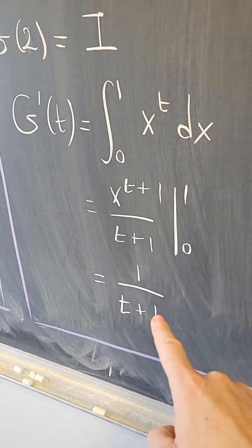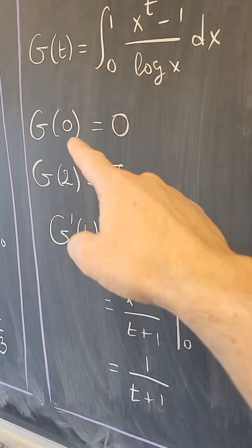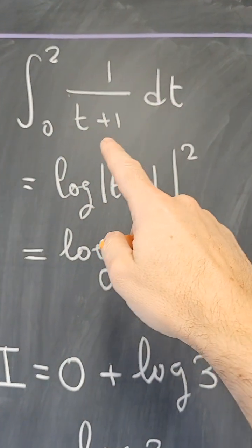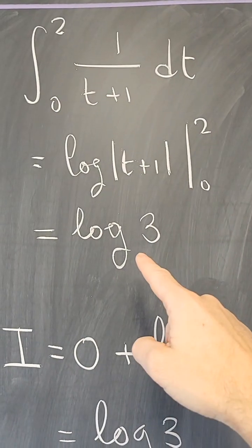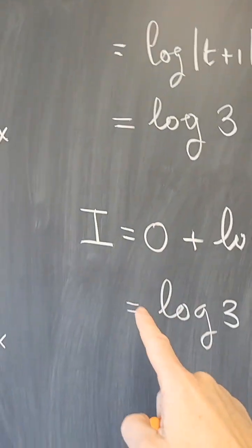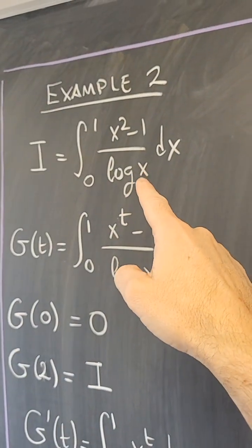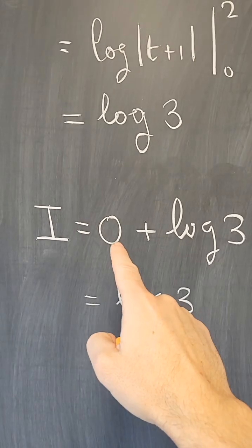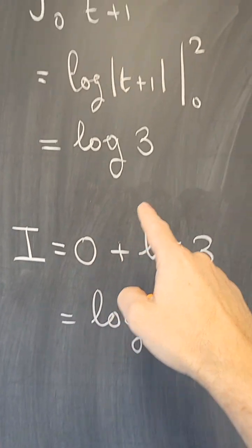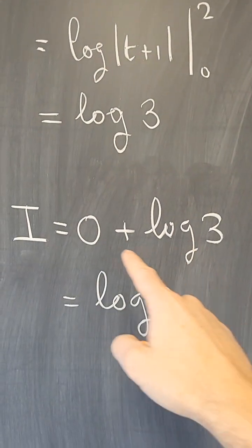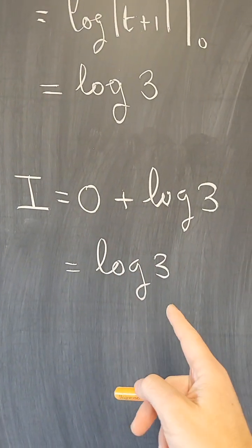So now I have to find the integral of g prime of t from 0 to 2. That is just log of t plus 1, which when evaluated, I just get log of 3. So the value of the integral that I wanted will be g of 0, which is 0, plus the value of this integral log of 3, so the value of the integral is just log of 3.